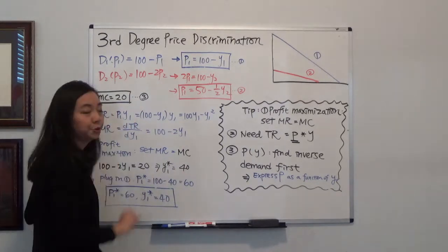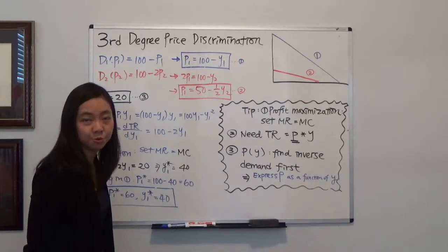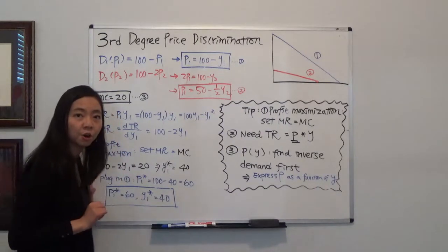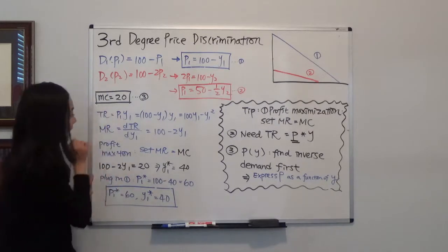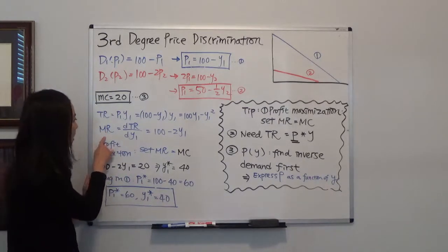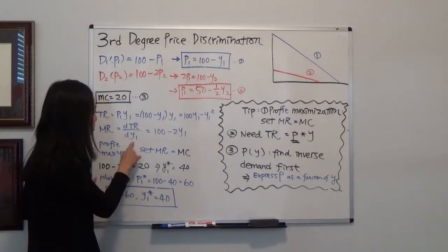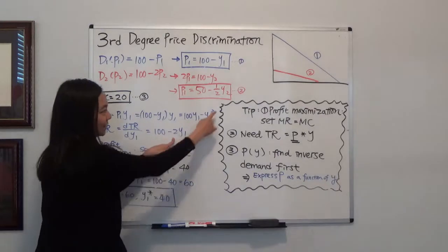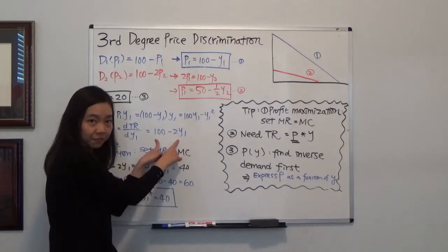After finding total revenue, we find marginal revenue by taking the derivative of total revenue with respect to quantity. The marginal revenue is the derivative of TR with respect to y1, which gives 100 minus 2y1.